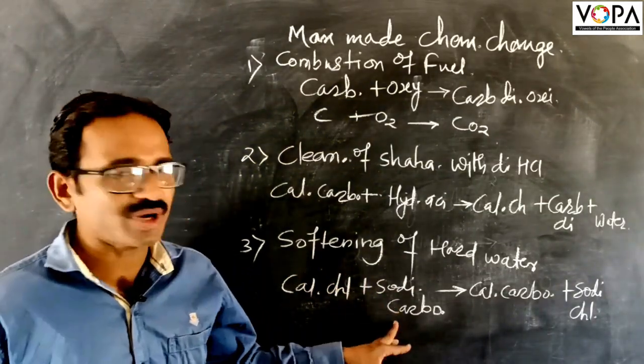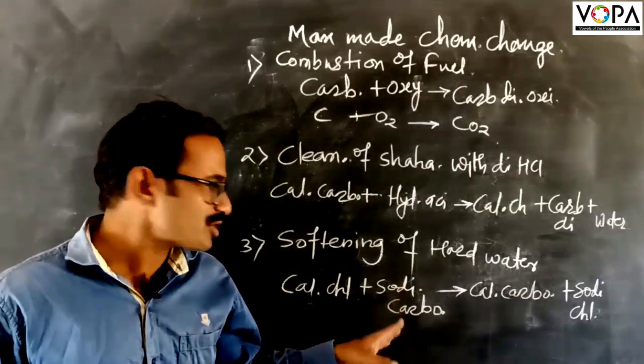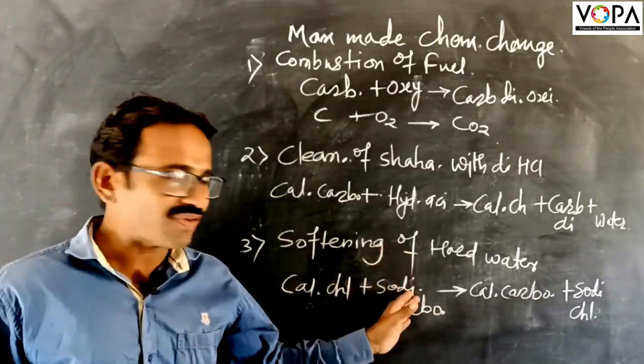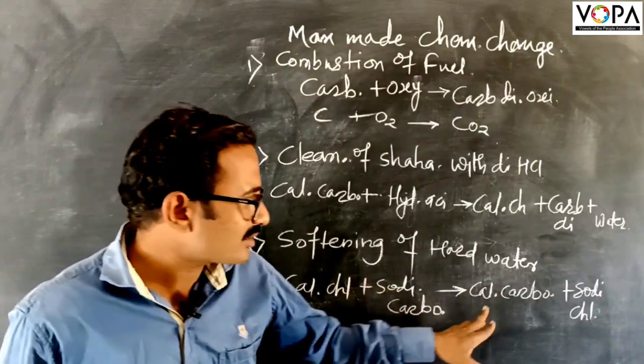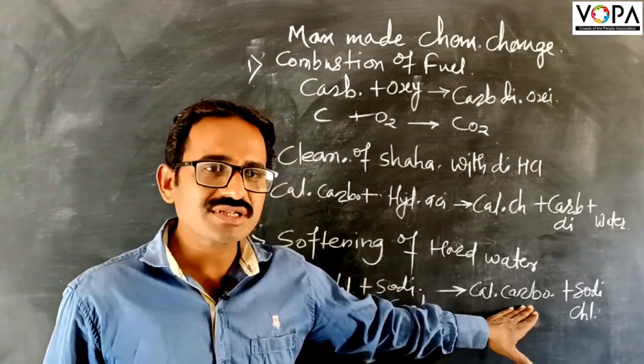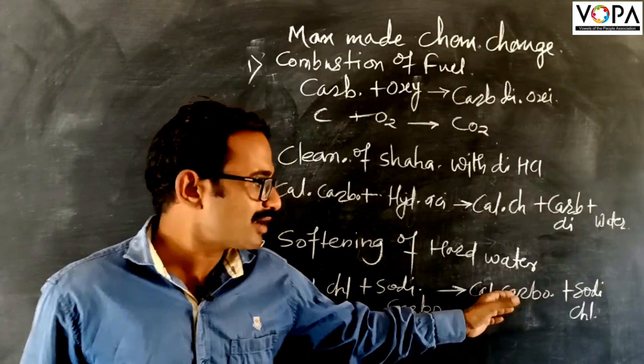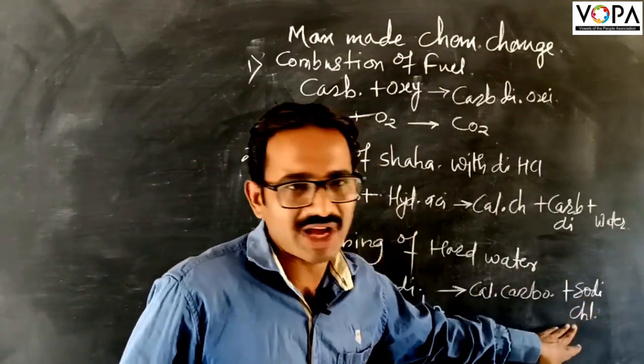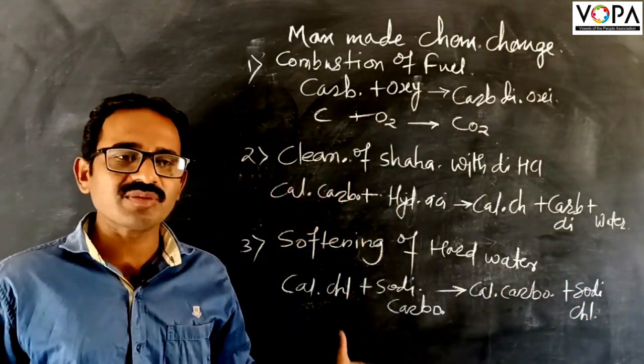we add sodium carbonate, that means washing soda, to the hard water. Then we get calcium carbonate which flows through the water and sodium carbonate. Then the water will be softened.